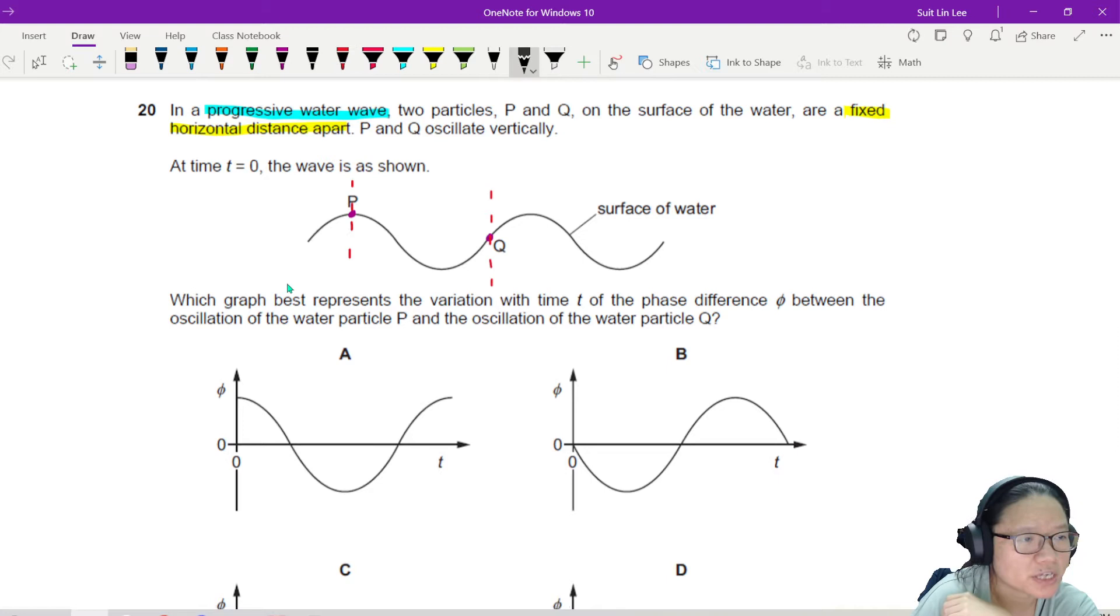In fact, if I trace out the equilibrium position, which is somewhere here, you can say that here to here, the path difference or the length difference is equal to three-quarter of a lambda, right?